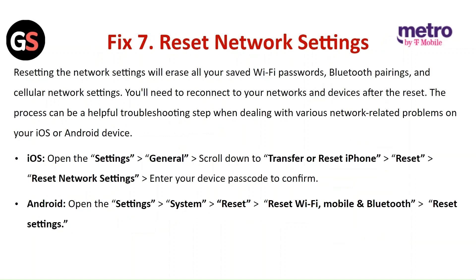Fix 7: Reset network settings. Resetting the network settings will erase all your saved Wi-Fi passwords, Bluetooth pairings, and cellular network settings. You will need to reconnect to your networks and devices after the reset. This process can be a helpful troubleshooting step when dealing with various network-related problems on your iPhone or Android device.